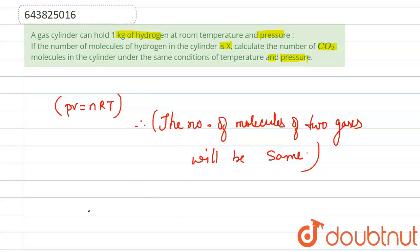Now moving further, the question states a gas cylinder can hold 1 kg of hydrogen. If we calculate the mass of hydrogen, mass of hydrogen is 1 kg, which is equal to 1000 grams.